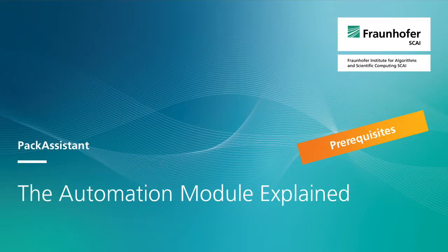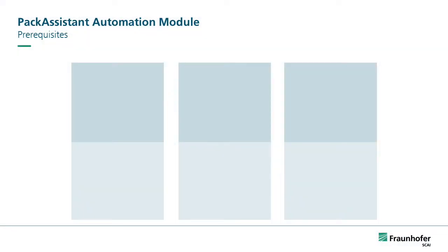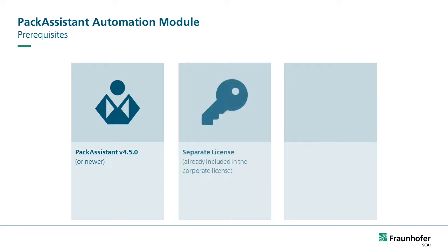Prerequisites: In order to make use of the new Pack Assistant add-on module, you need Pack Assistant version 4.5.0 or newer, a separate license which is already included in the corporate license, and a user account in Pack Assistant. In order to purchase a separate license for the Pack Assistant API, please contact your Pack Assistant distributor for further information.